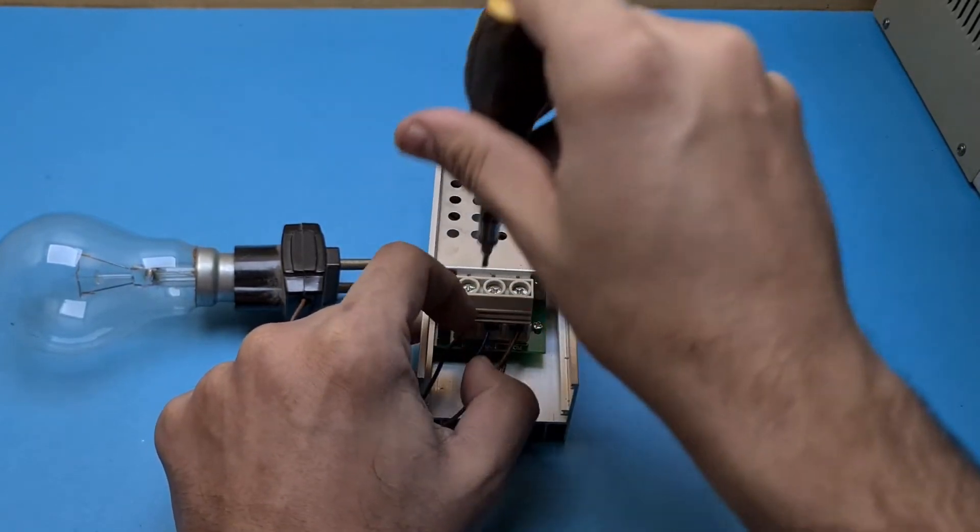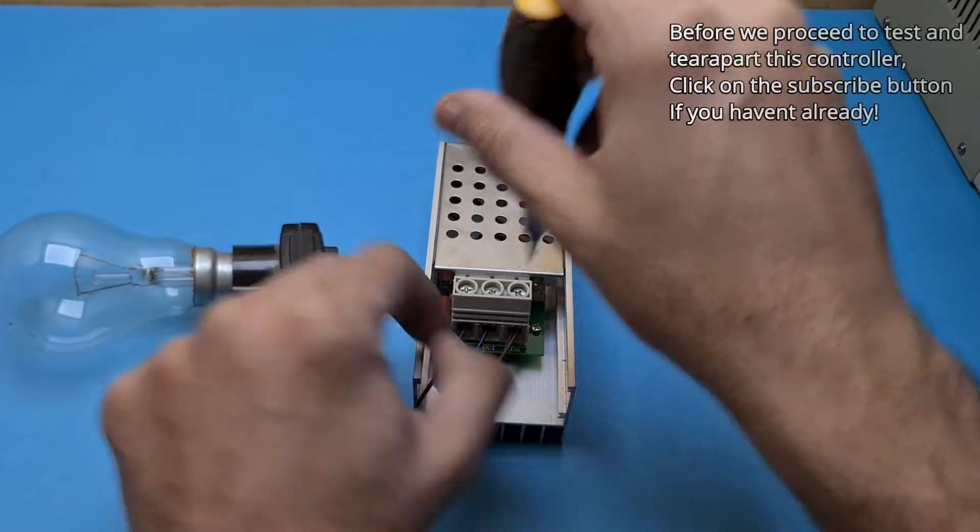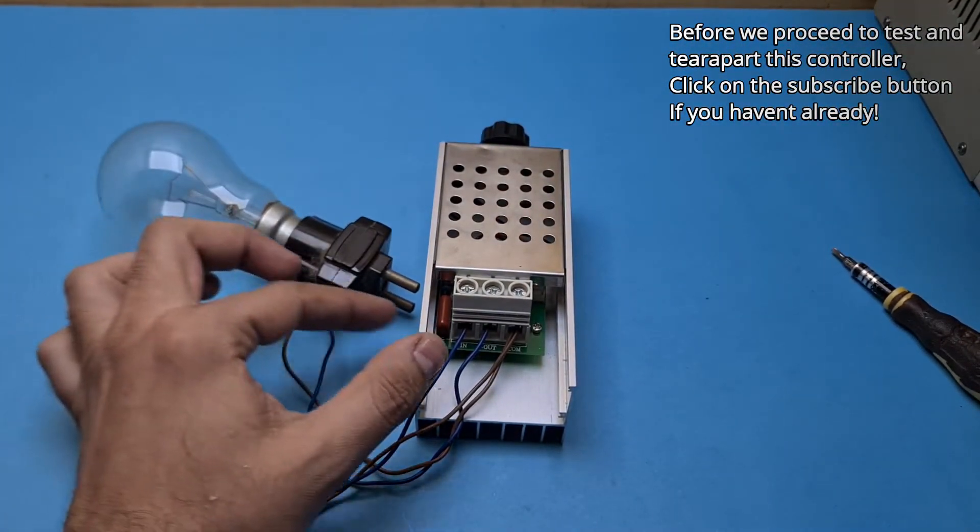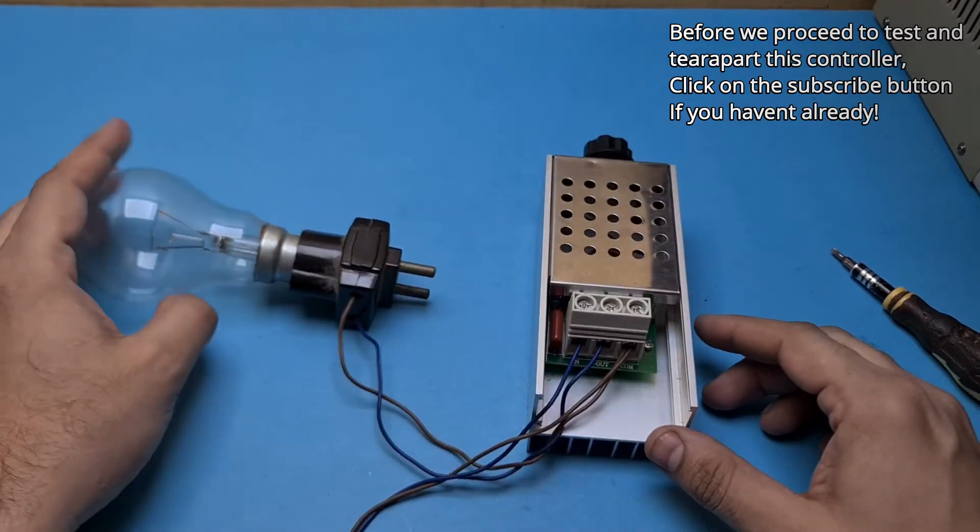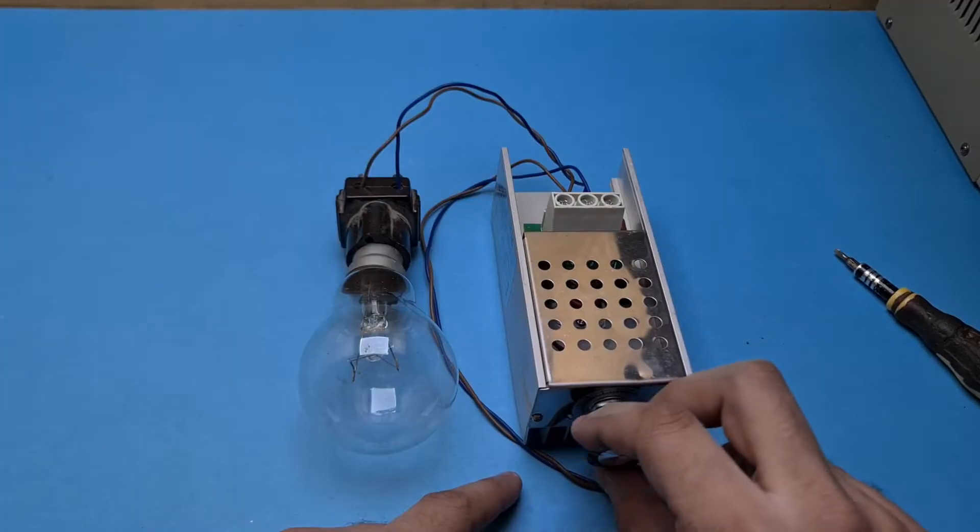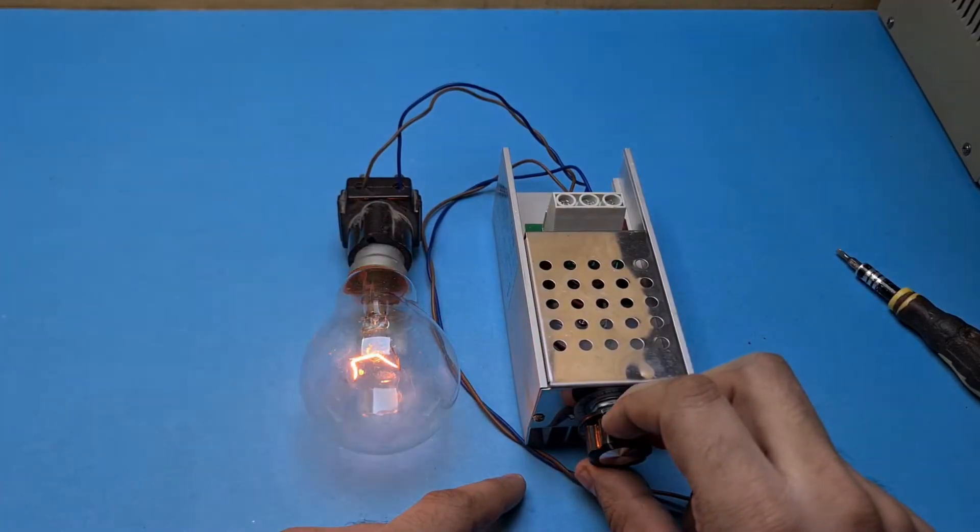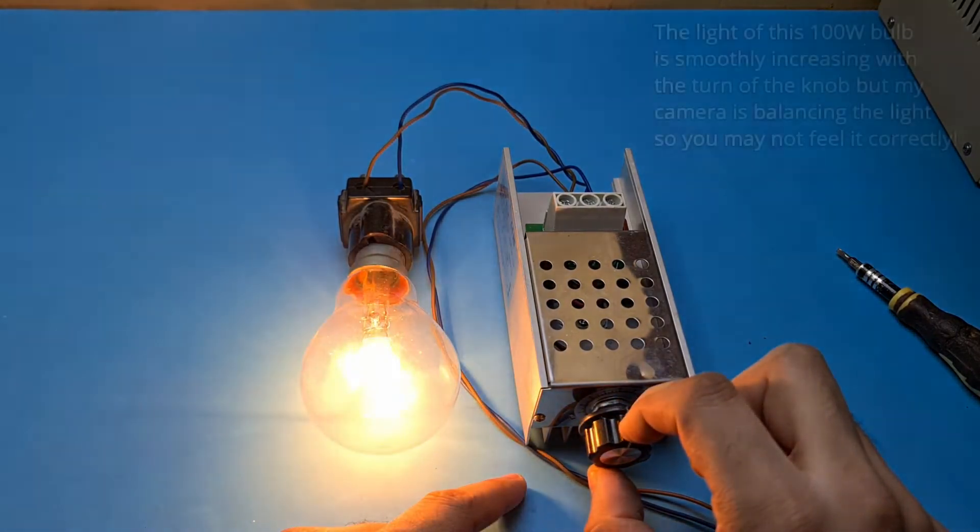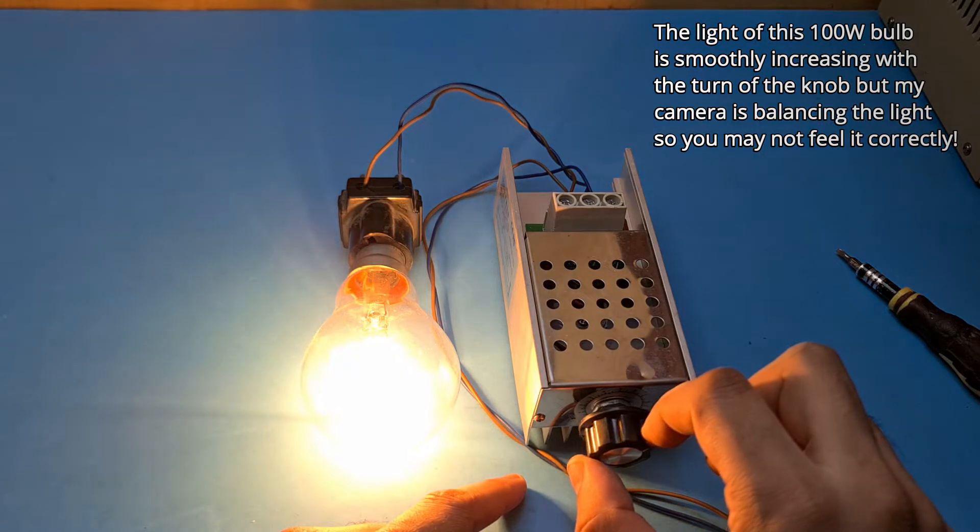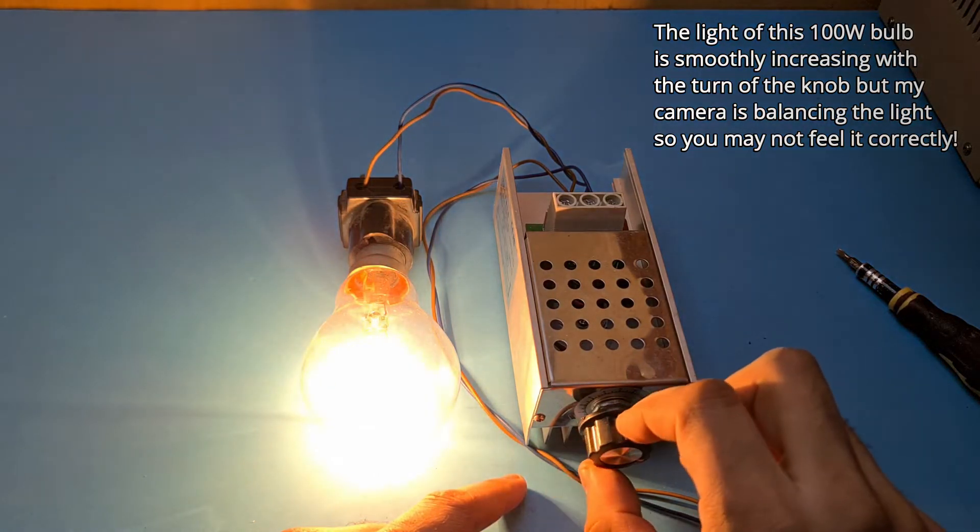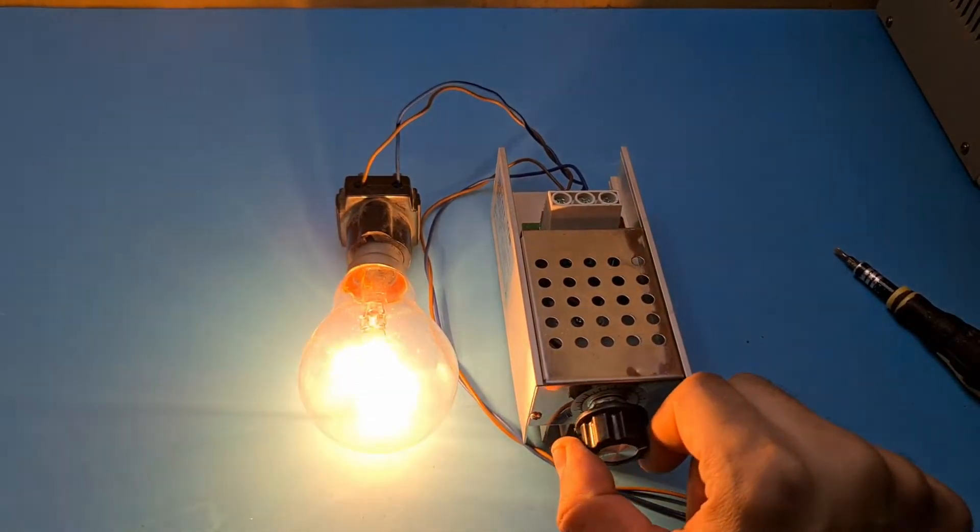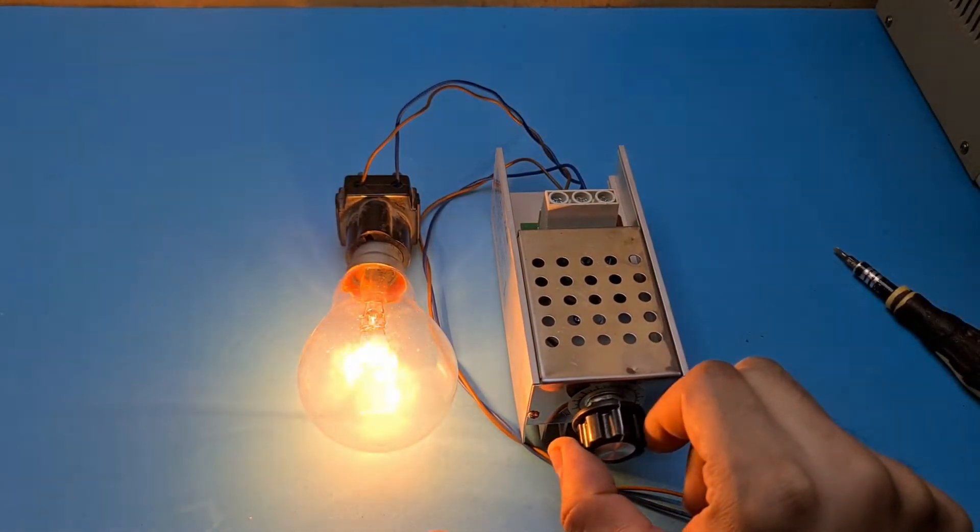I am now going to turn it on, but before that please click on the subscribe button if you have not already done so. I will now slowly increase the voltage here, which should control the light of this bulb. As you can see, the light of this bulb is increasing. It is full now, and now I am decreasing the light and yeah, it is almost turned off now.